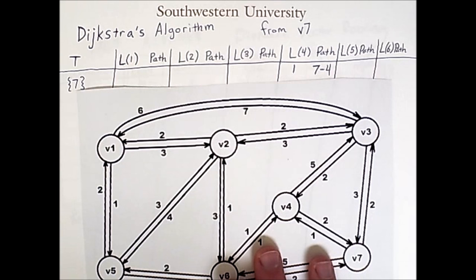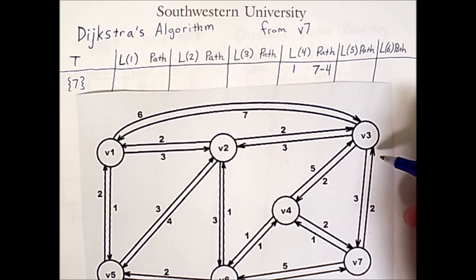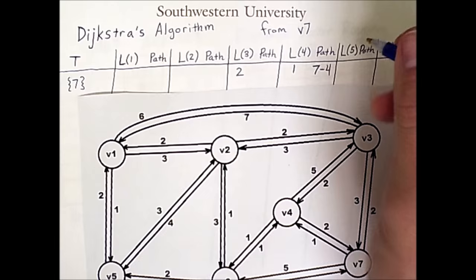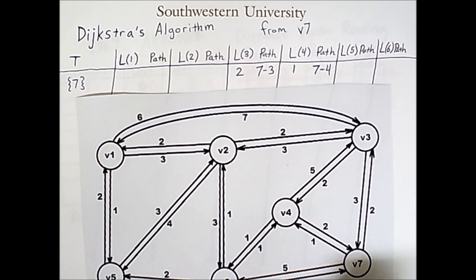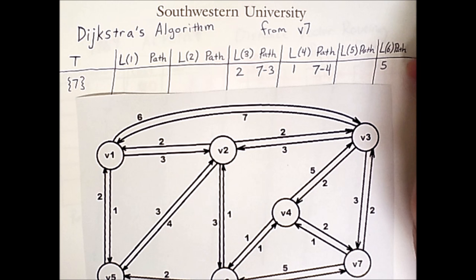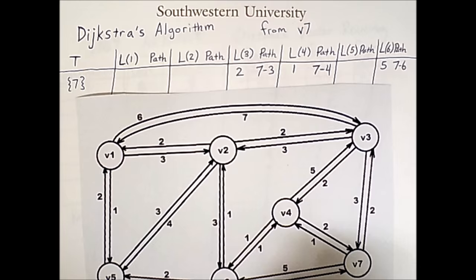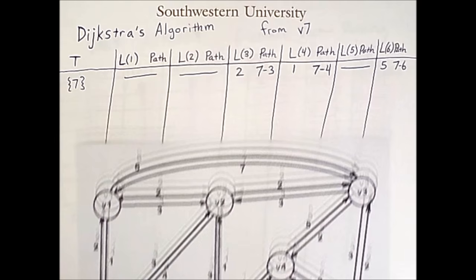Similarly, going to V3, 1 hop has a cost of 2, so under 3 we'll put a 2, and the path is 7-3. And going to 6, the cost is 5, and the path itself is 7-6. Now, we cannot reach any of these other vertices with a single hop, so we will leave those columns blank for now. And that is how we complete the first row of this table.